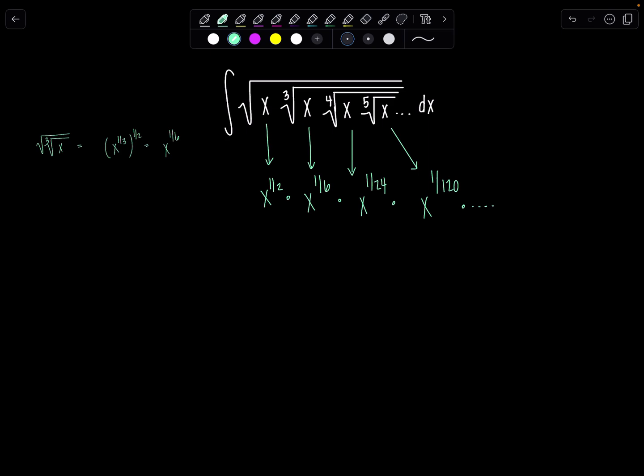Now we can simplify further. Notice all of these bases are the same, so when we simplify we can add all the exponents together. So I can rewrite this now as x to the one-half plus one-sixth plus one over 24 plus one over 120 plus dot dot dot.